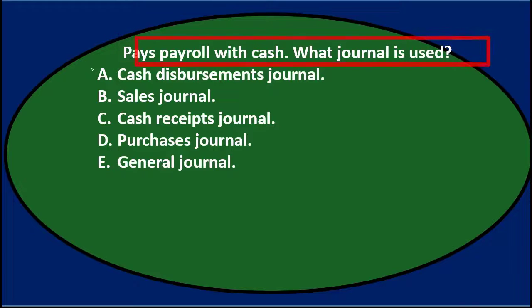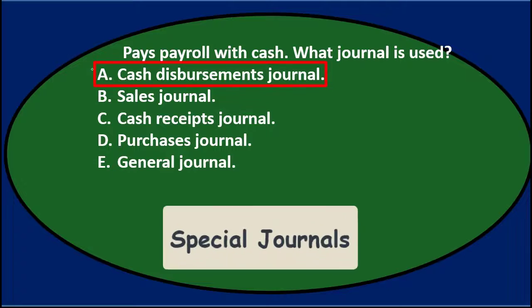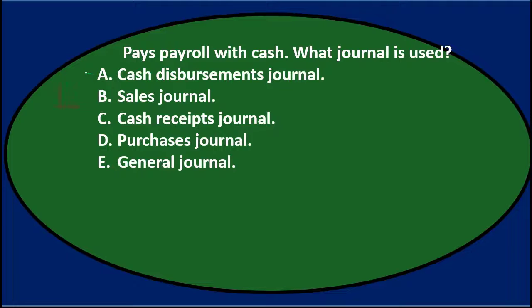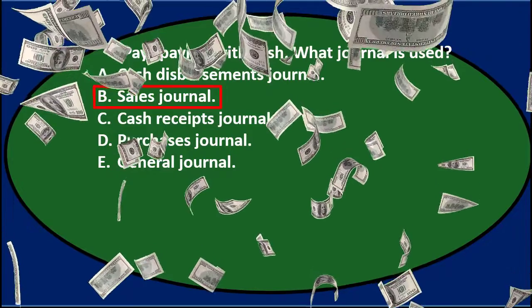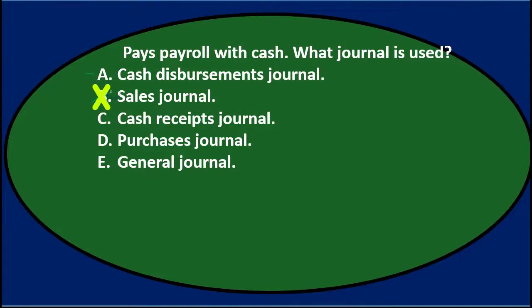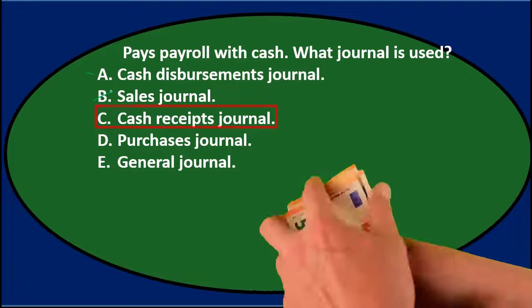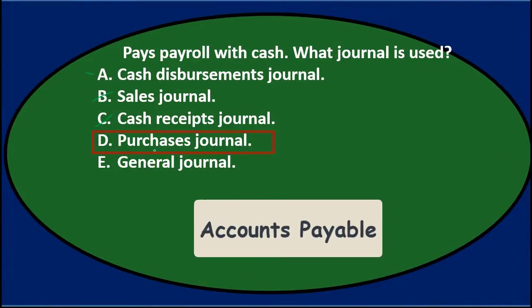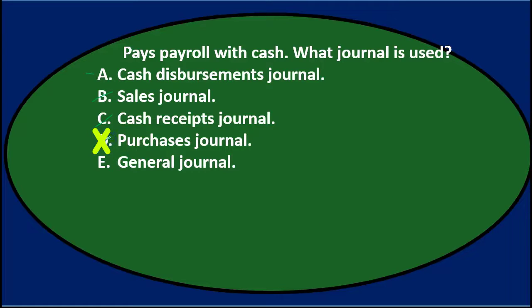A, cash disbursements journal — that's a special journal used when we disburse or pay cash, so that looks reasonable since we're paying cash for payroll. B, sales journal — that's specific to making sales on account with no cash involved, so not applicable to payroll. C, cash receipts journal — that's used when we receive cash, not when we pay it out. D, purchases journal — while we're purchasing labor in a way, the purchases journal really deals with accounts payable for inventory. E, general journal — the default if no other journal fits.